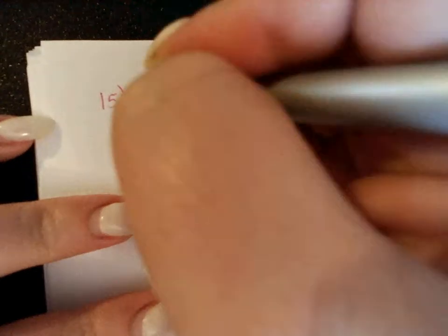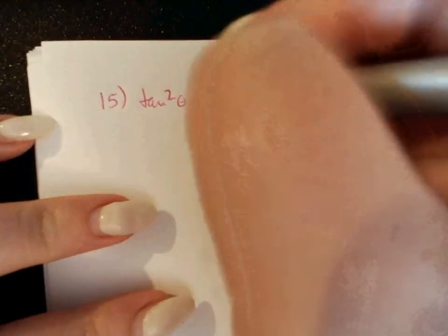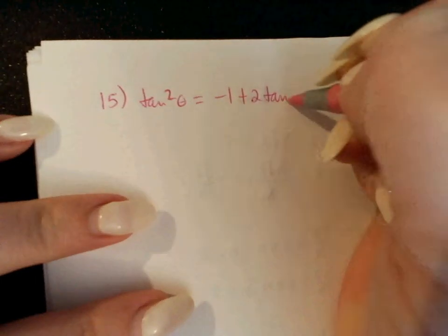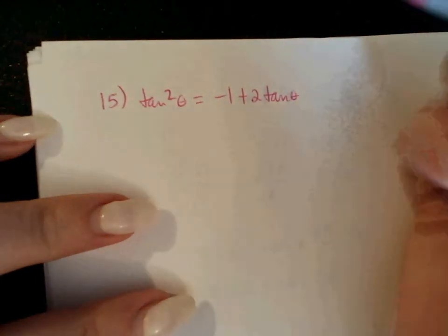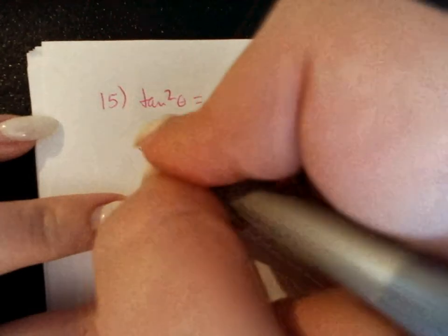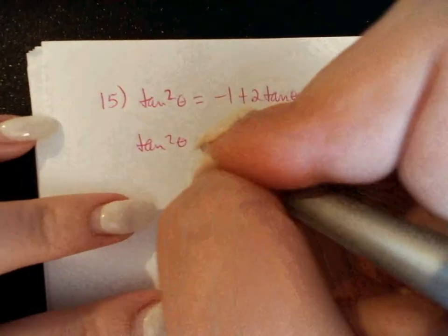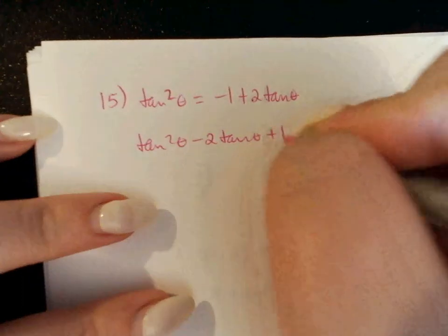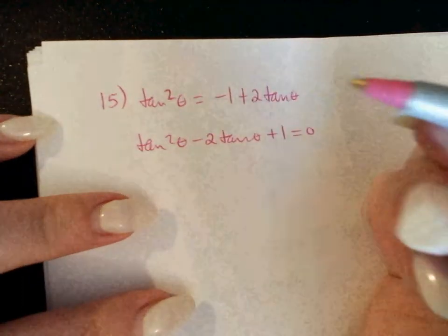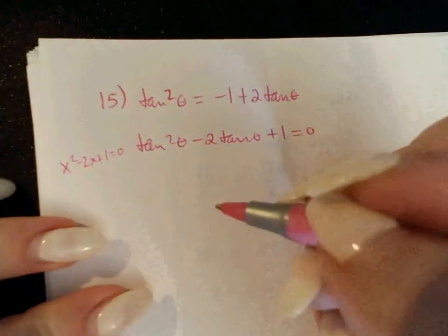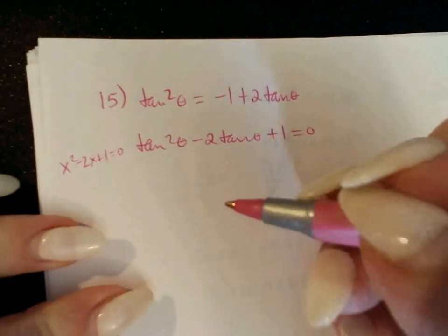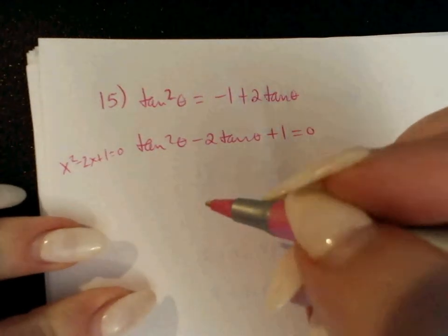I've got one more: number 15. Number 15 says tan squared equals negative 1 plus 2 tan theta. To solve that, I get everything on the same side: tan squared minus 2 tan theta plus 1 equals 0. I've got a quadratic, linear, and a constant. x squared minus 2x plus 1 — they really like that one — because you're limited on what you can solve using the unit circle.